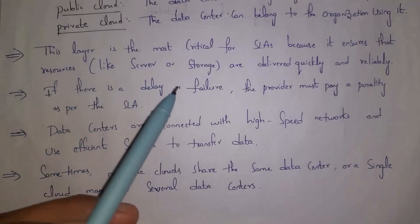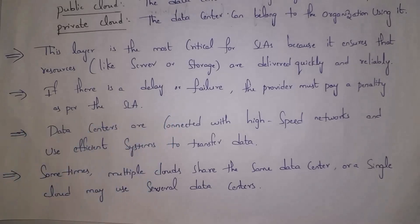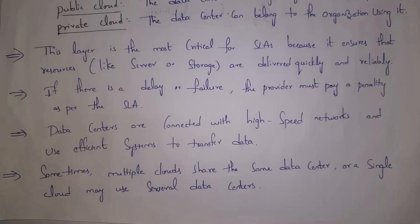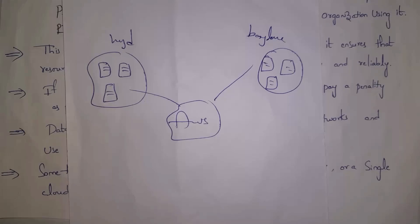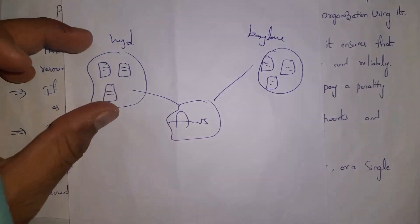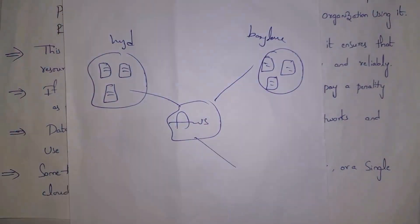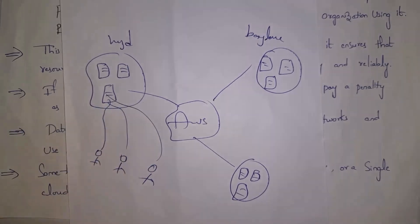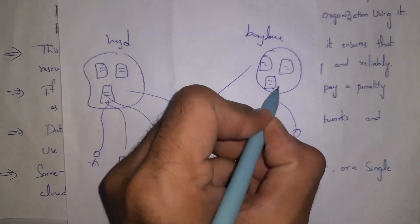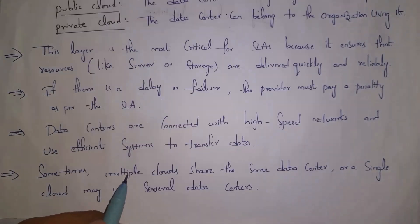If there is any delay or failure in cloud service, the cloud provider must pay a penalty as per the SLA. Data centers are connected with high-speed networks and use efficient systems to transfer data. Sometimes multiple clouds share the same data center, or a single cloud may use several data centers. For example, AWS has data centers located in Hyderabad, Bangalore, and Delhi — multiple users can use the same data center, or a single user can store data across different data centers.